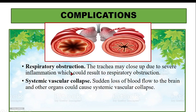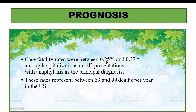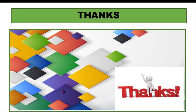Complications include respiratory obstruction — the trachea may close due to severe inflammation — and systemic vascular collapse, where sudden loss of blood flow to the brain and organs occurs. Regarding prognosis, death from anaphylaxis is usually associated with delayed treatment. If recognized and treated promptly with epinephrine, the prognosis is generally good and the vast majority of patients recover fully. Case fatality rates are 0.25 to 0.33 percent among hospitalized patients and 0.33 percent in the emergency department, representing 63 to 99 deaths per year in the U.S.